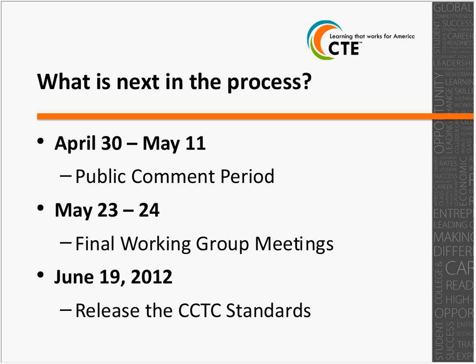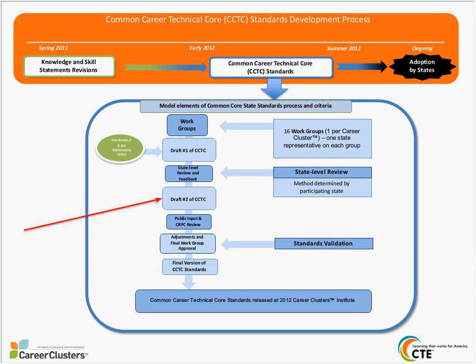Once the public comment period is complete, the data will be synthesized for final working group meetings — 16 cluster working groups meeting on May 23rd and 24th to finalize the standards. We will then release the standards for the Common Career Technical Core on June 19th at the National Career Clusters Institute in Washington, D.C. We are about halfway through the process, and the proposed standards — specifically the technical pieces — will be available for public comment beginning Monday.